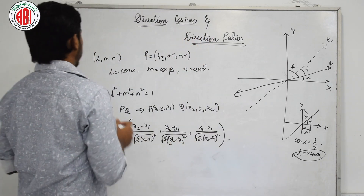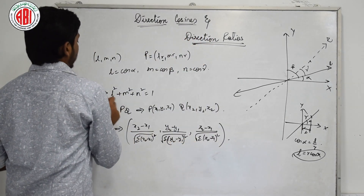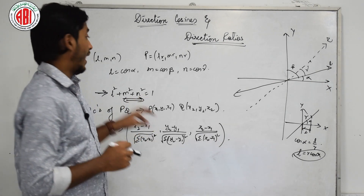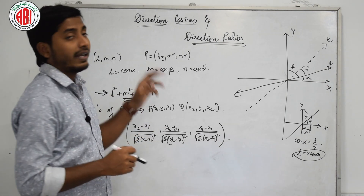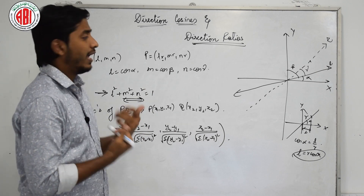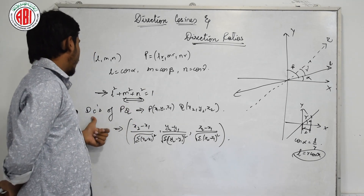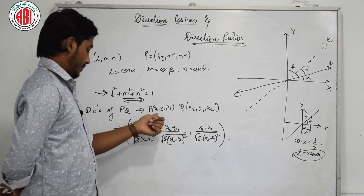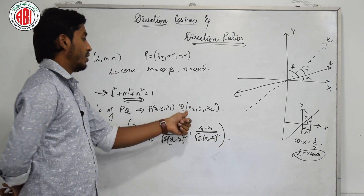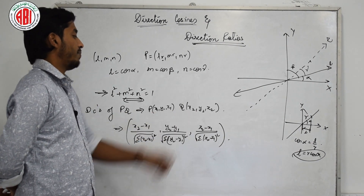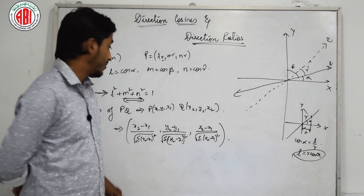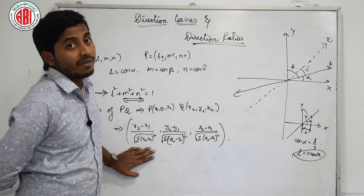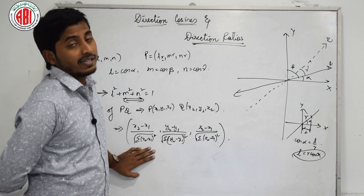The important rule to remember about DCs is: L squared plus M squared plus N squared equals 1, where LMN are DCs. And if we are asked to find the DCs of PQ, where PQ is a line passing from P(X1, Y1, Z1) to Q(X2, Y2, Z2), the formula is: (X2 minus X1) divided by the square root of the summation of (X2 minus X1) squared, meaning the square root of (X2-X1)² + (Y2-Y1)² + (Z2-Z1)².